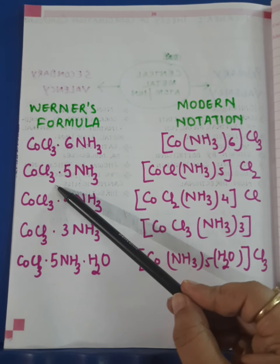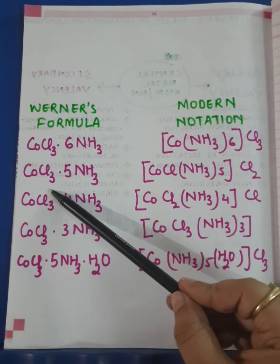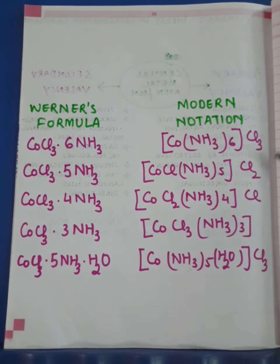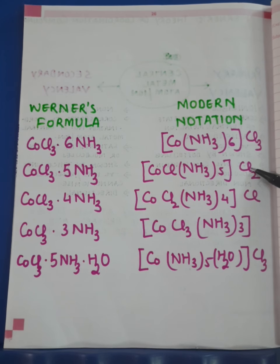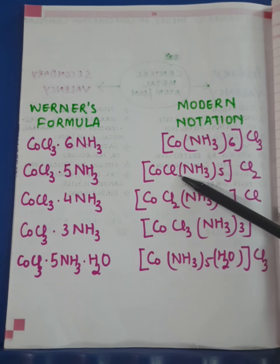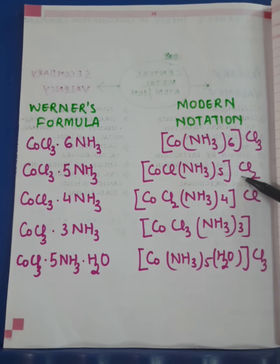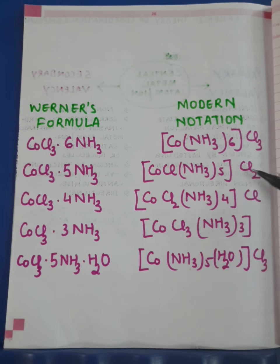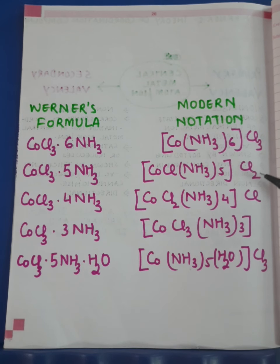Out of the three Cl in Werner's formula, two Cl are left — they are not ligands. They correspond to primary valency which is ionizable, so they are outside the coordination sphere and form the ionization sphere.